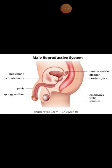At the base of the urinary bladder, encircling the urethra, is the prostate gland. This prostate gland pours an alkaline secretion into the semen as it passes through the urethra.